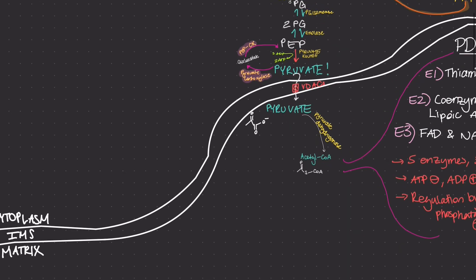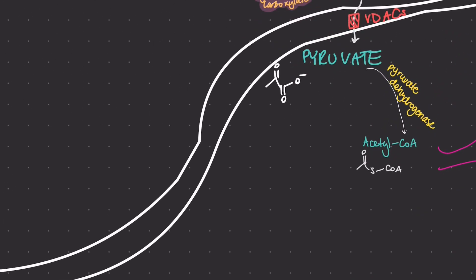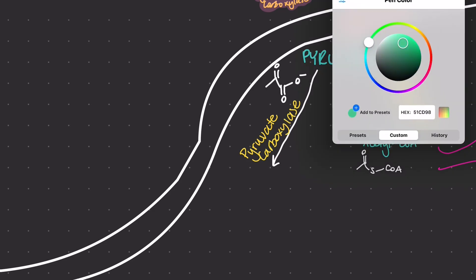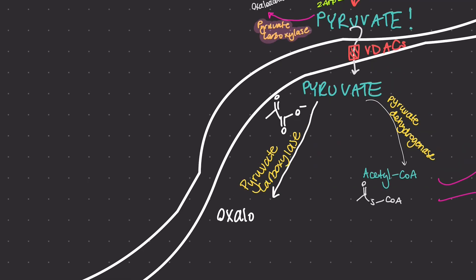Moving on, let's talk about the citric acid cycle. Pyruvate undergoes a reaction with the enzyme pyruvate carboxylase, which turns it into oxaloacetate. There are a lot of steps here, and I would encourage you to create your own mnemonic or learn one from your SI leader in order to facilitate memorization.